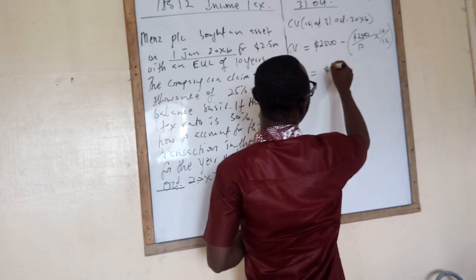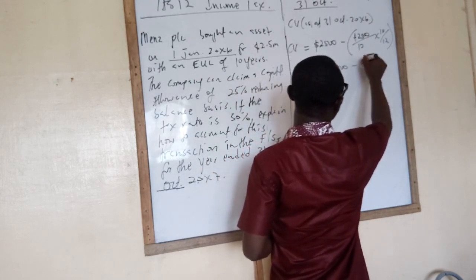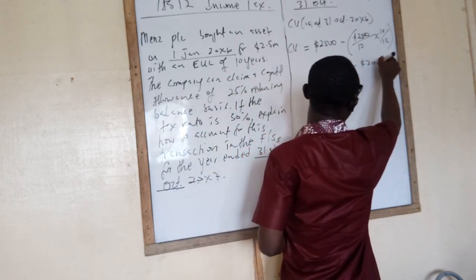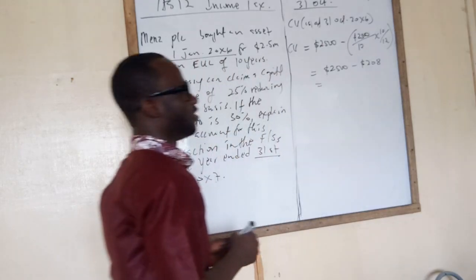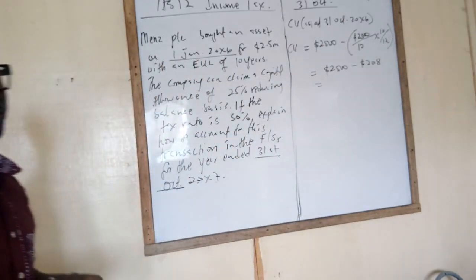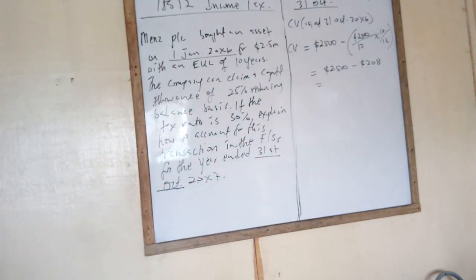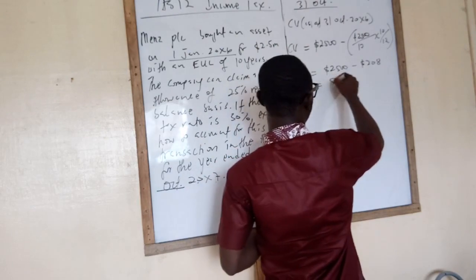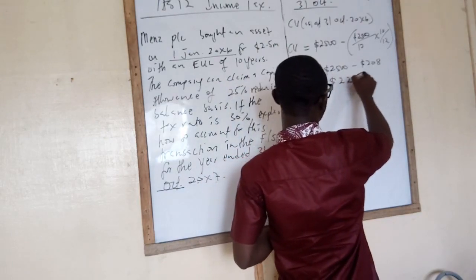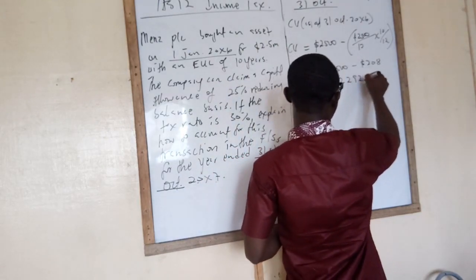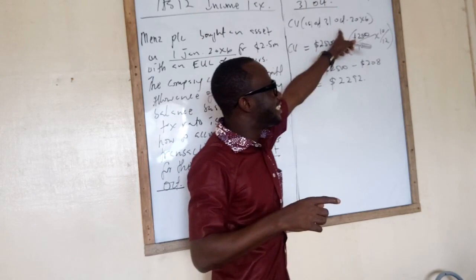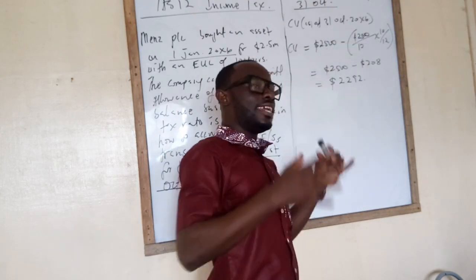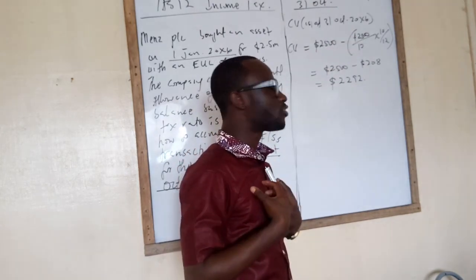So now, it will be 2500 and then minus 208. So what's the carrying value now? 2292. So as at this date, this is the carrying value of the asset.